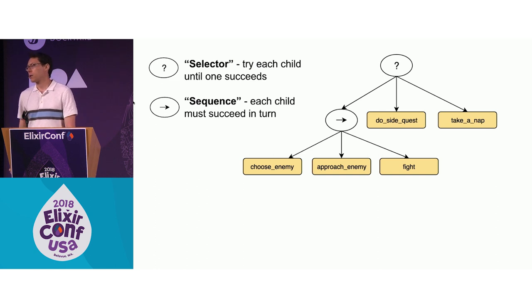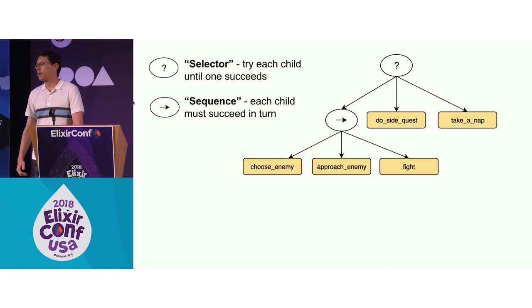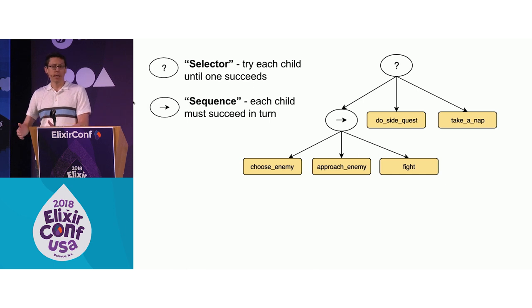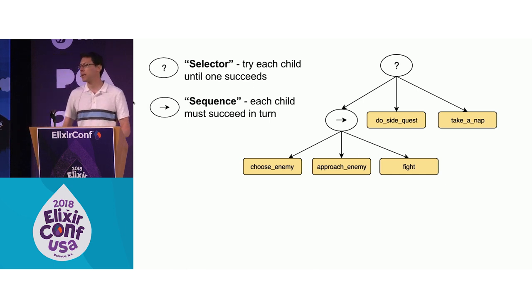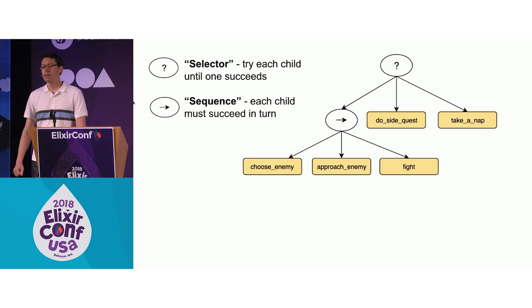This is a new kind of control node called a sequence, and it's basically the inverse of a selector. It starts with its first child, and if that succeeds, it moves on to the next one, and keeps moving on until all the children have succeeded, and then it will succeed. If any of a sequence's children fails, then the whole sequence fails.